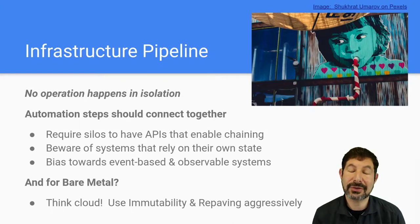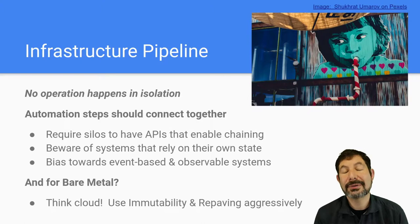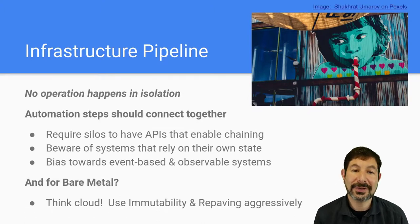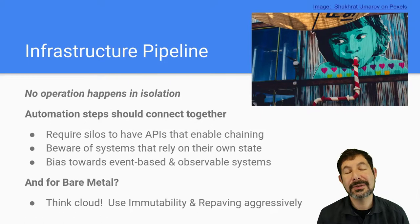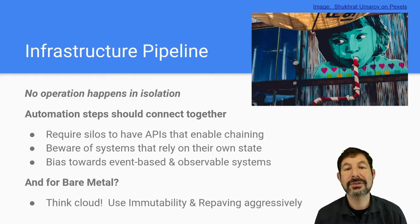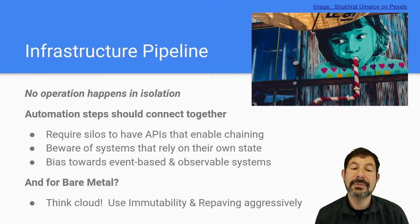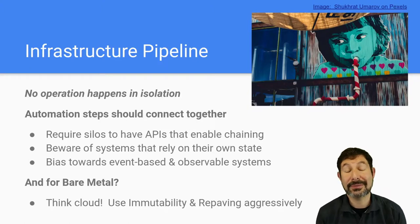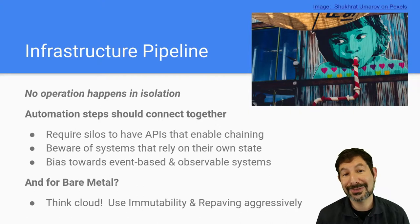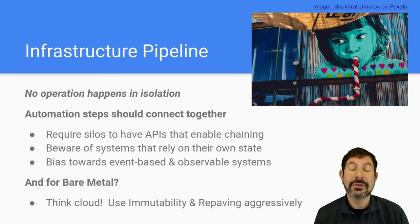That brings us to the infrastructure pipeline concept: no operation in your infrastructure ever happens in isolation. There is no single server action. Everything involves multiple steps and things that work together. You start from a state you want to get to and need to reach a final state — that involves configuration, provisioning, DNS entries, certificates, security, getting secrets unlocked, handing off information to other systems. They all have to work together, which means silos have to have APIs that enable that. You do have to be aware that systems relying exclusively on their own state will cause challenges in your pipeline.